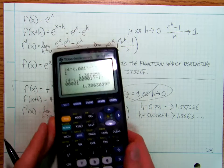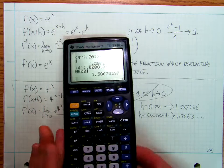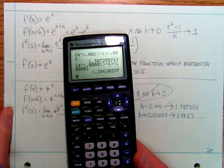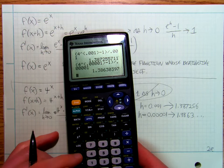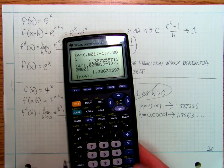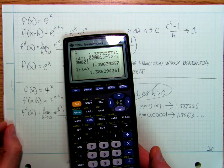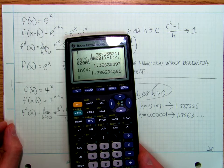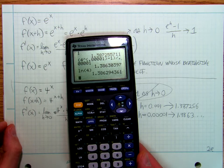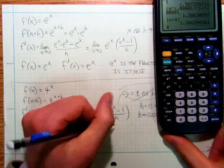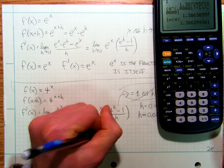So it looks like I'm converging on like 1.38 something or other. And what is that going to be? Well, look at this. You're not going to, this is something that I'm just going to tell you. The ln of 4 is equal to 1.38623, bam.